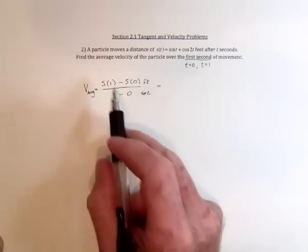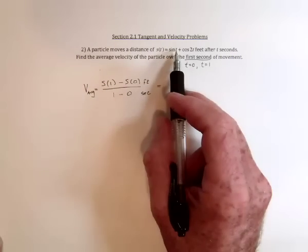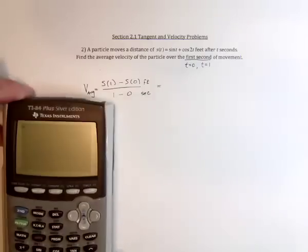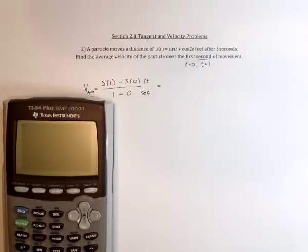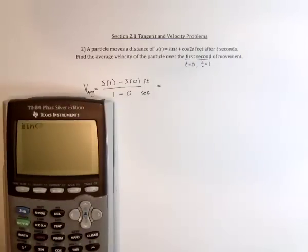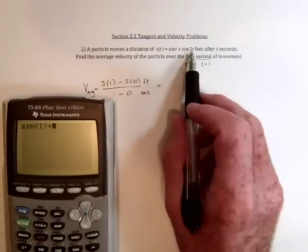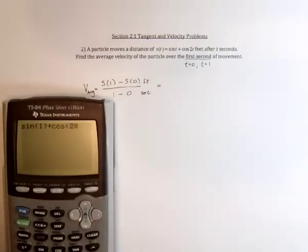And then we need to substitute a 1 in there. So sine of 1 is in radians because it doesn't say 1 degree. So we need to find out how much is sine of 1. Plus, and then substitute a 1 in for t over here. Cosine of 2.